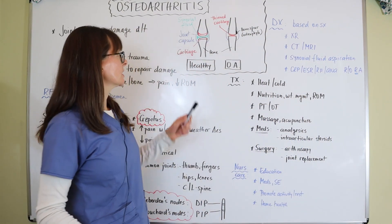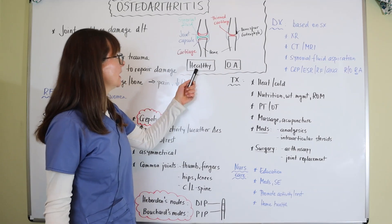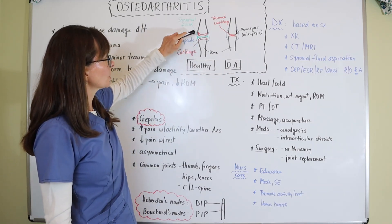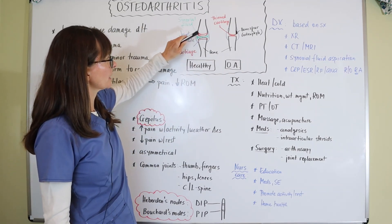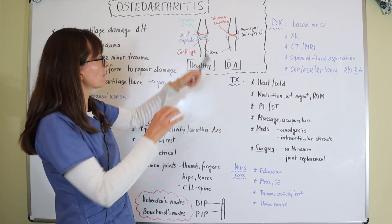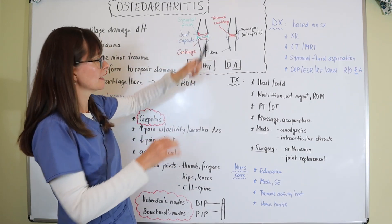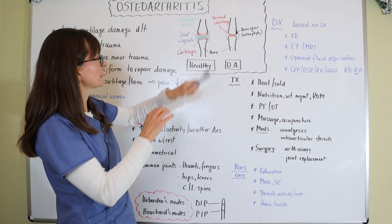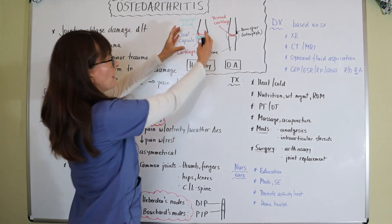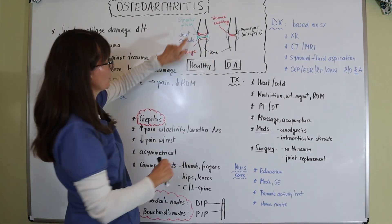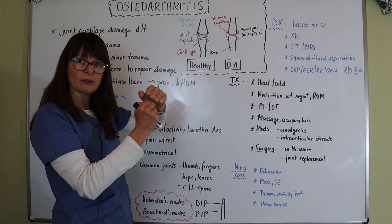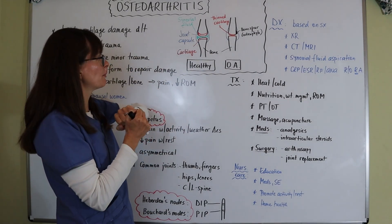If we look at this here, here's a healthy joint. We have the two bones, the cartilage at the end of each bone to cover it — shown here in red — and the joint capsule surrounds the entire joint. In between we have synovial fluid to act as a buffer.